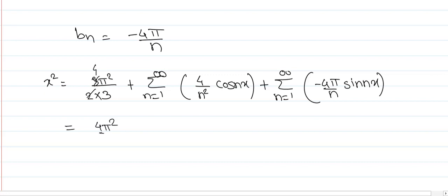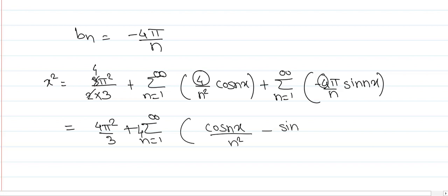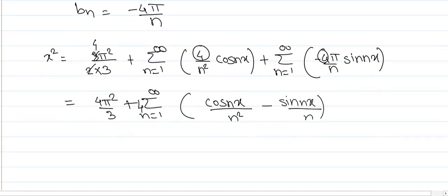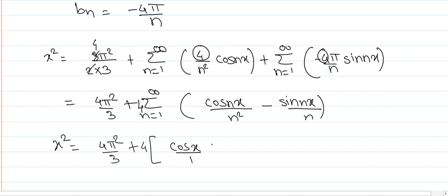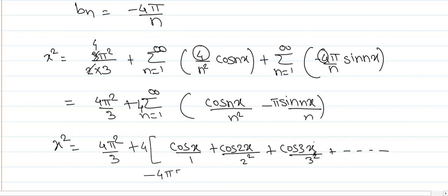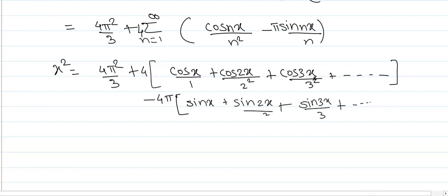So x² = 4π²/3 + summation from 1 to infinity of 4 cos nx/n² minus 4π sin nx/n. Taking 4 common from both terms, and applying the summation: x² = 4π²/3 + 4(cos x/1² + cos 2x/2² + cos 3x/3² + … up to infinity) minus 4π(sin x + sin 2x/2 + sin 3x/3 + … up to infinity).